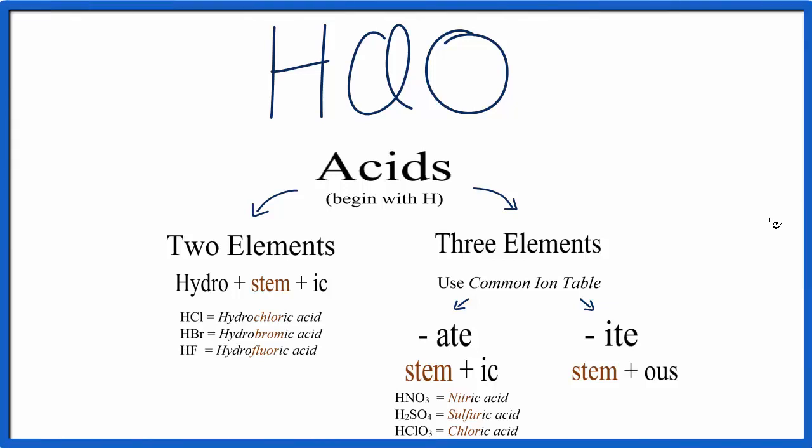To write the name for HClO, hypochlorous acid, we'll use this flowchart here and a common ion table. We can see we have HClO, three different elements, so we're going to use this part of the table.